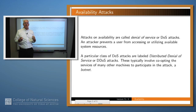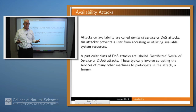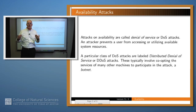So what is availability? It's just assuring that the resources that you need are available — are there when you need to use them. An attack on availability is called a denial-of-service attack, an availability attack, or in many cases a distributed denial-of-service attack, which is very common these days. That's when you have a number of computers or a distributed system attacking the availability of some resource.